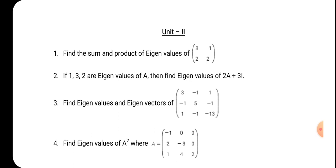Second: if 1, 3, 2 are the Eigenvalues of A, then find the Eigenvalues of 2A plus 3I. The A matrix is not given — only its Eigenvalues are there. We have a rule: suppose the expression 2A plus 3I as matrix B. The Eigenvalues of B can be calculated by replacing A with Lambda, giving B equal to 2 Lambda plus 3. Substitute Lambda values 1, 3, 2 directly and you will get the Eigenvalues of B.